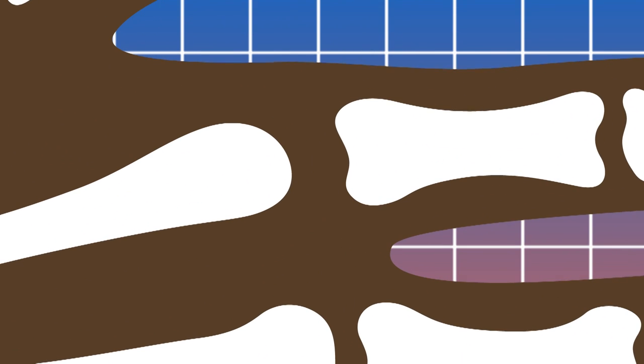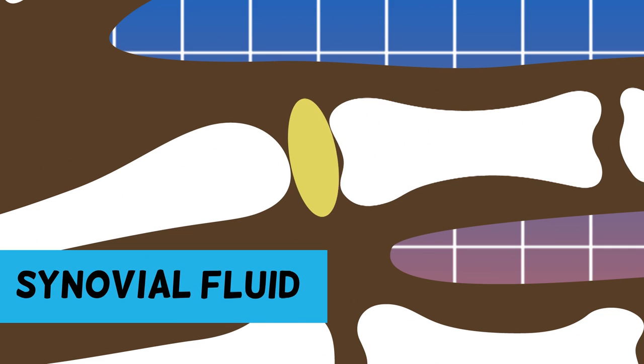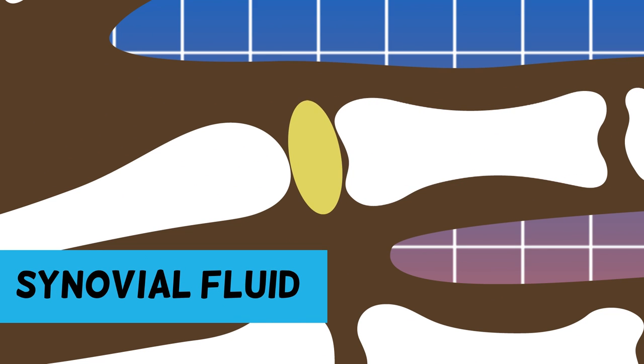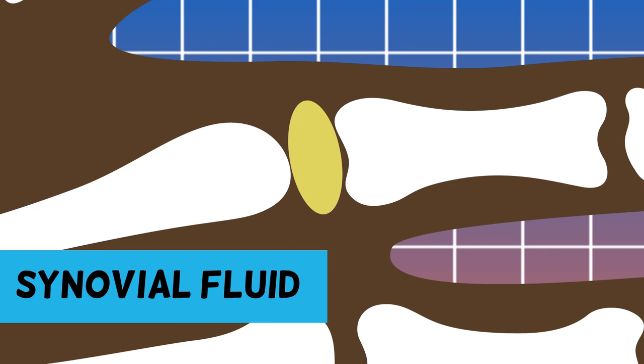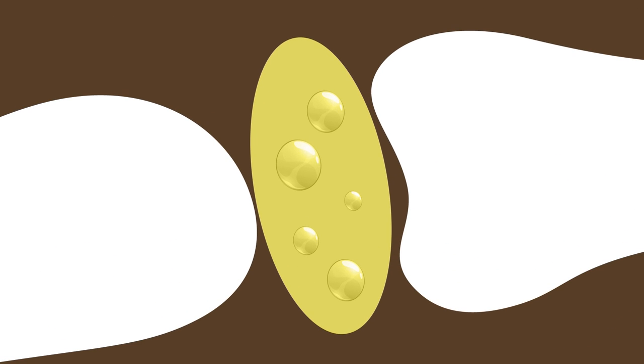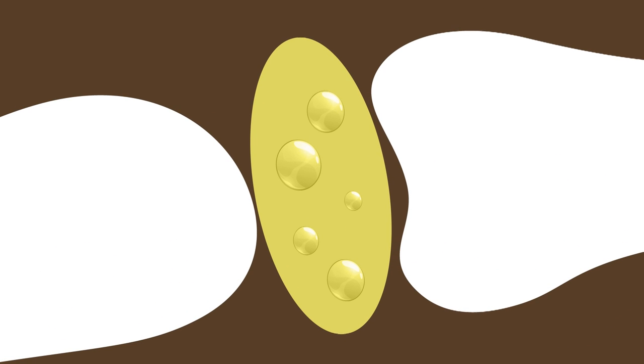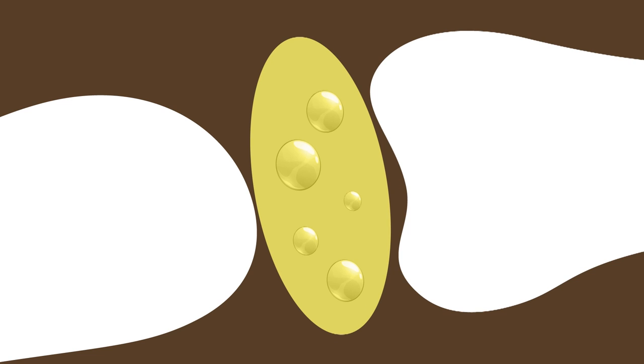They're caused by tiny bubbles in your synovial fluid, which is the fancy name for the fluid in between your joints that keeps your bones from scraping together. Think of it like bubble wrap. When you crack your knuckles, it squeezes those microscopic bubbles that build up in the fluid, and they all pop, making that distinct, oddly satisfying knuckle cracking noise.